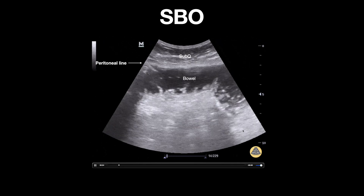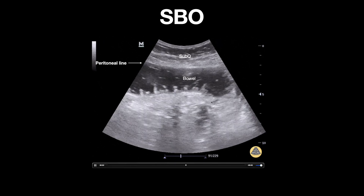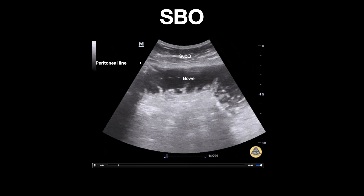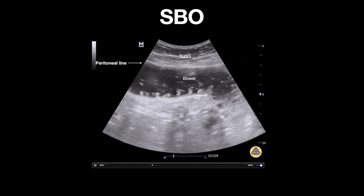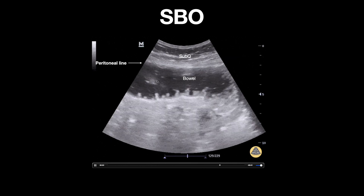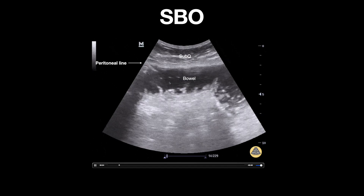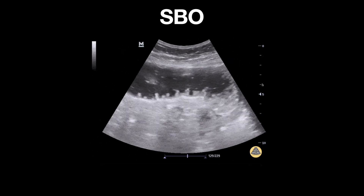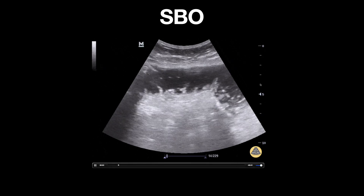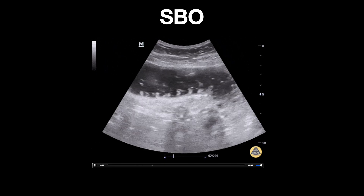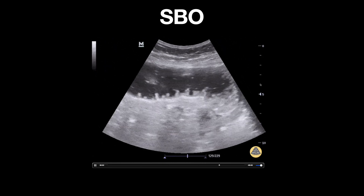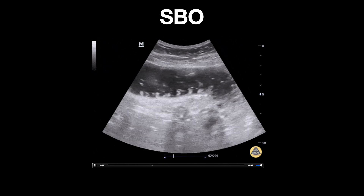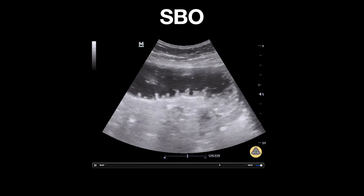In this clip, we can appreciate a dilated bowel loop. Notice this structure here, which is seen pushed up against the anterior abdominal wall. This is small bowel. Normally, the small bowel is not well visualized on ultrasound due to it containing air. However, if a small bowel obstruction occurs, it becomes fluid-filled and more visible.